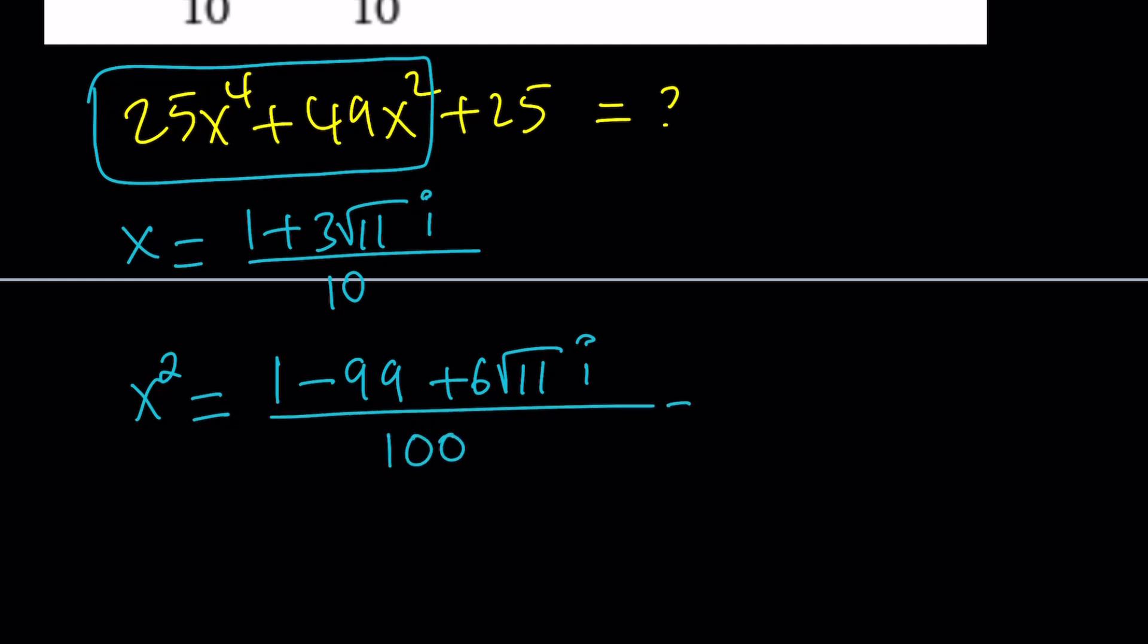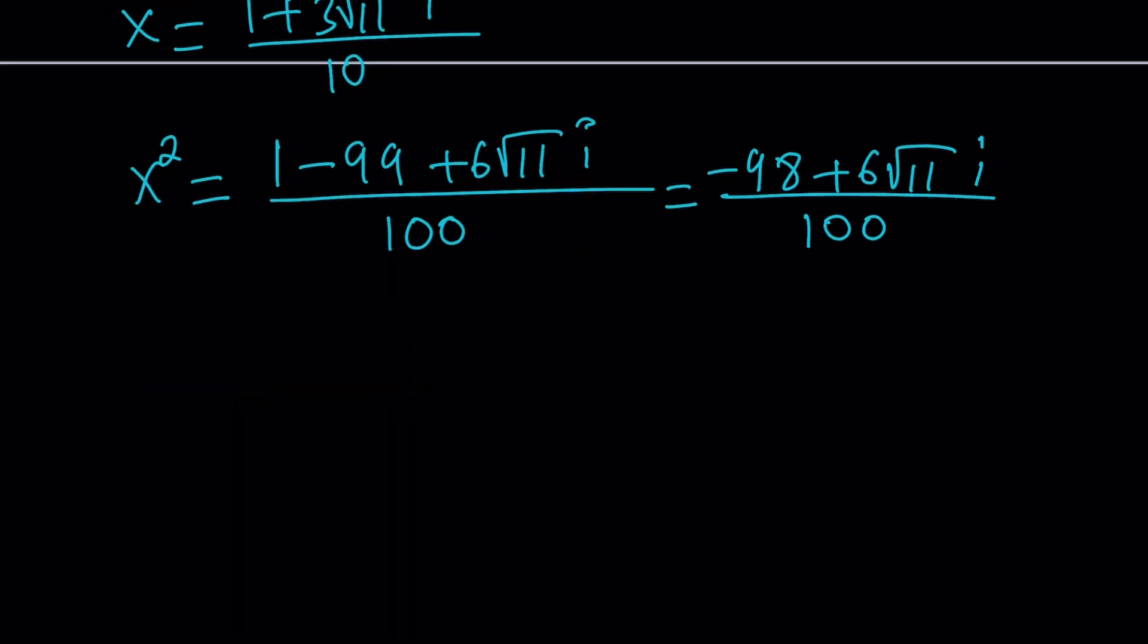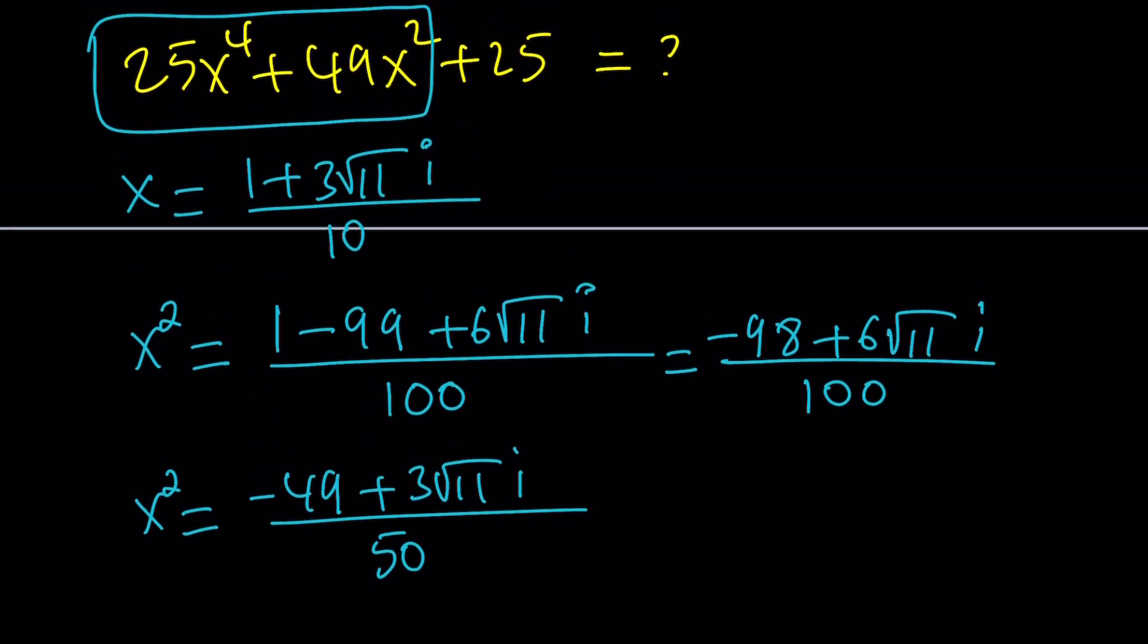Great. This is going to give us negative 98 plus 6 root 11i divided by 100. And obviously, everything can be divided by 2. So x squared can be written as negative 49 plus 3 root 11i divided by 50. Of course, this is just x squared. And then we're going to find x to the fourth power, so on and so forth.